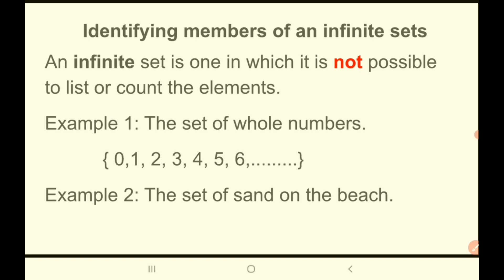Another example of an infinite set would be the set of grains of sand on the beach — you could not count all those grains. Another example is the set of stars in the sky; we are not able to count all the stars. So please remember: a finite set is one where you can count all the elements and list all the members, but for an infinite set, you can't list all the members.